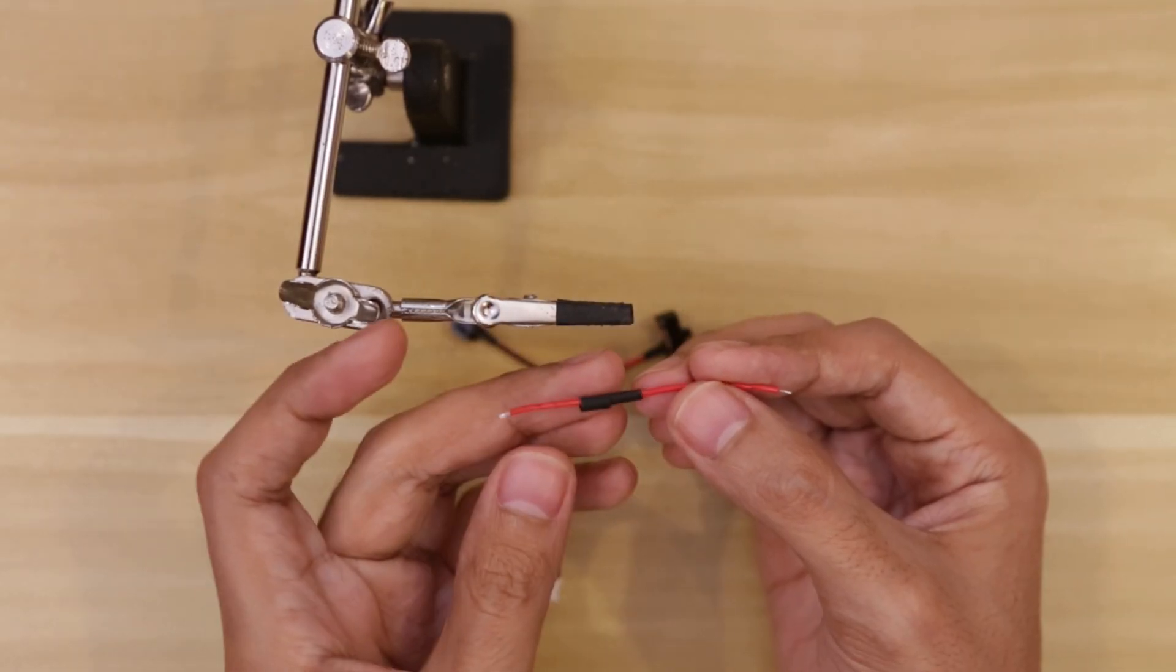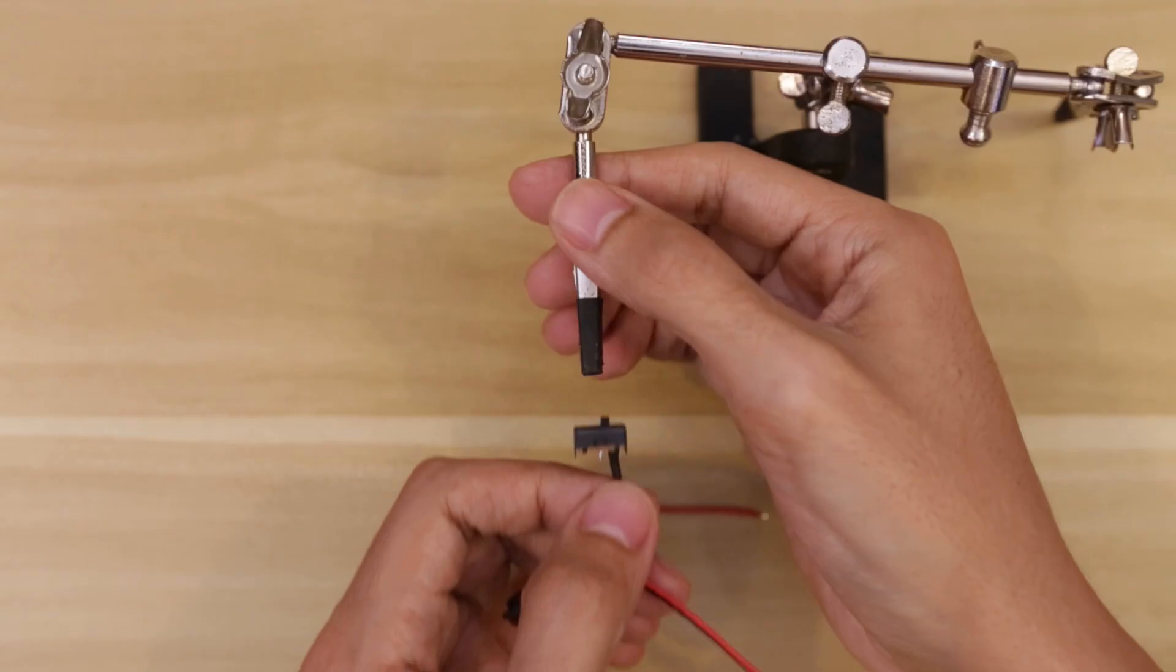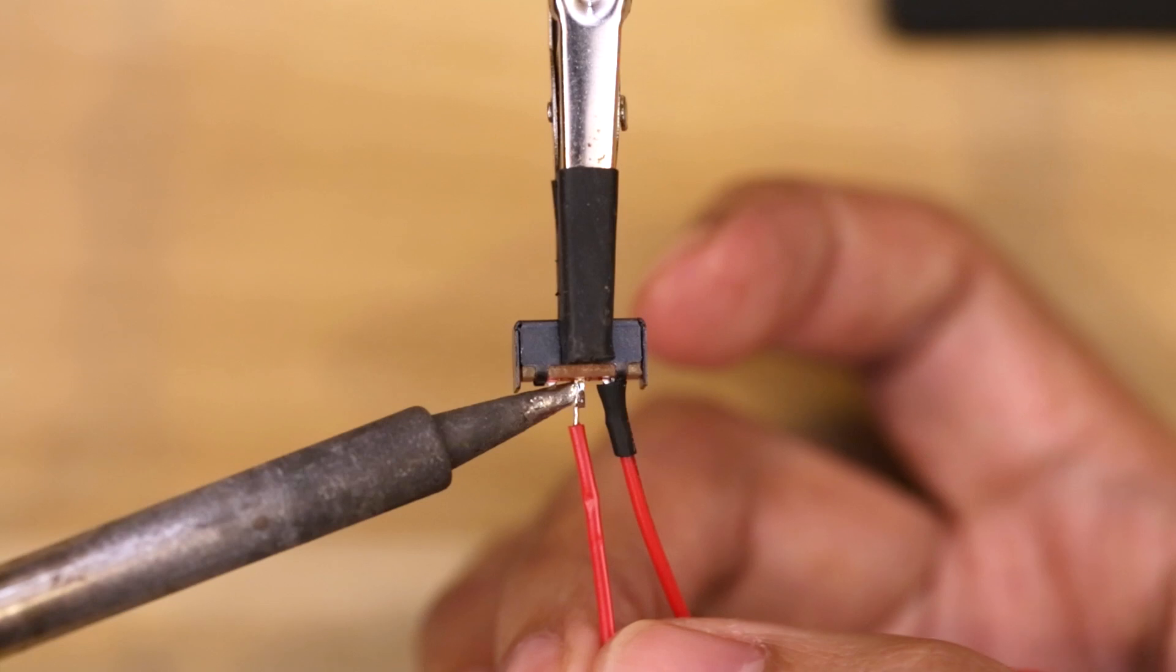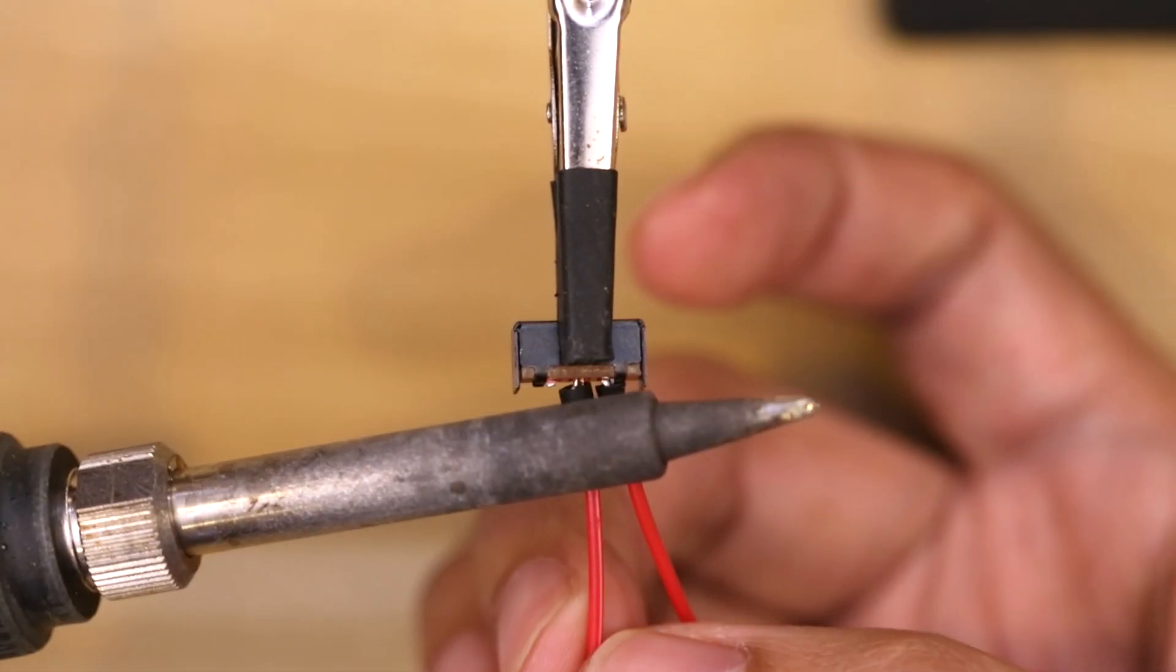Next I'll cut up two more pieces of heat shrink tubing and slide them onto the wire. We'll secure the slide switch back onto the helping third hands and connect our wire to the remaining electrode. Slide over the heat shrink tubing and set it in place.